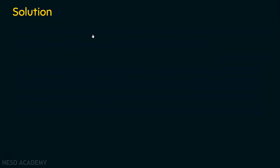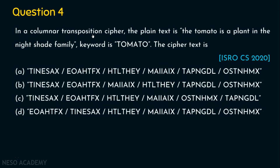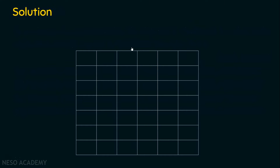How to deal with the row-column transposition? How many letters are there in the keyword? One, two, three, four, five, six — six letters are there in the keyword. So obviously, how many columns will we have? Six columns. I am going to create a matrix or table which contains six columns.